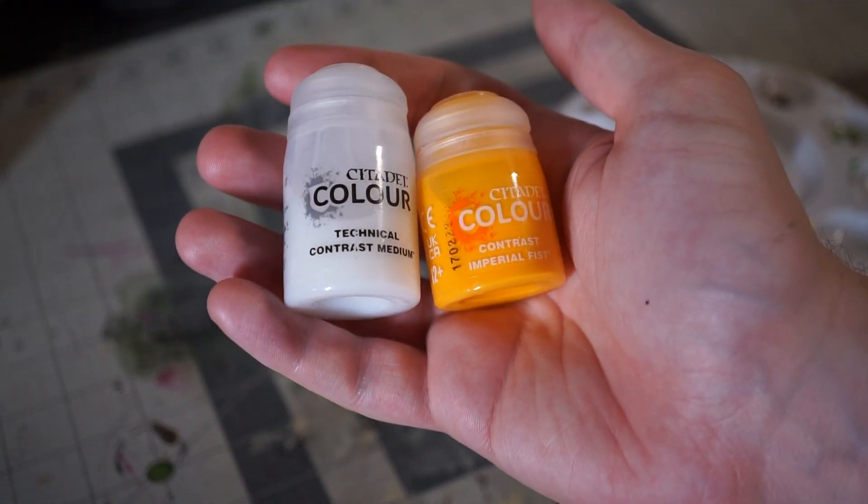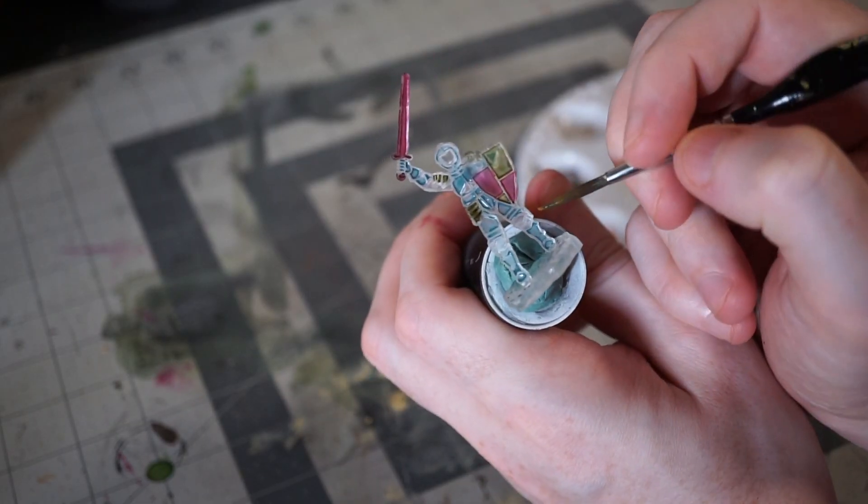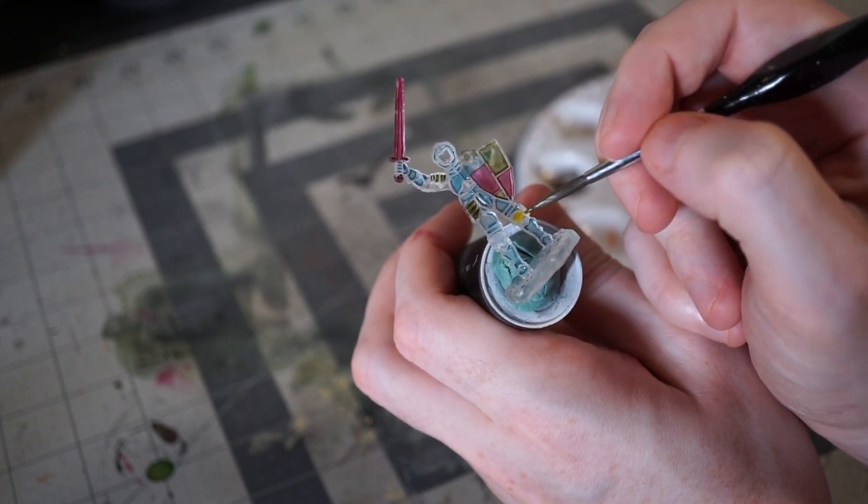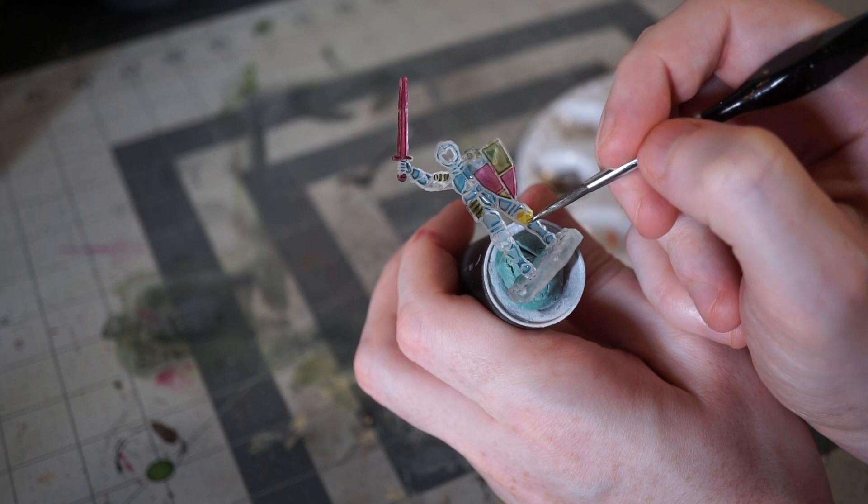I do the same thing with Imperial Fist as our last color. Again, it's very highly pigmented, so I mix it down about 50-50 with contrast medium and then apply it to every panel that doesn't have paint on it yet.